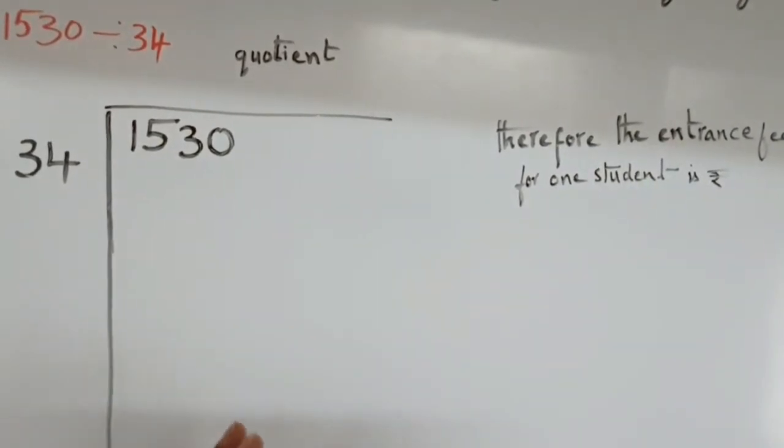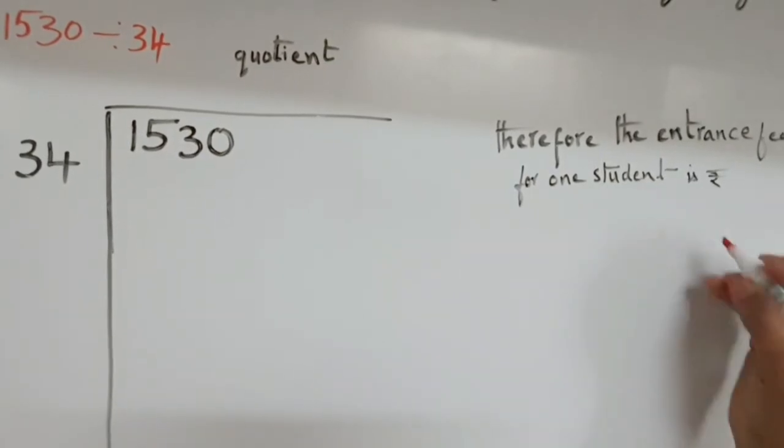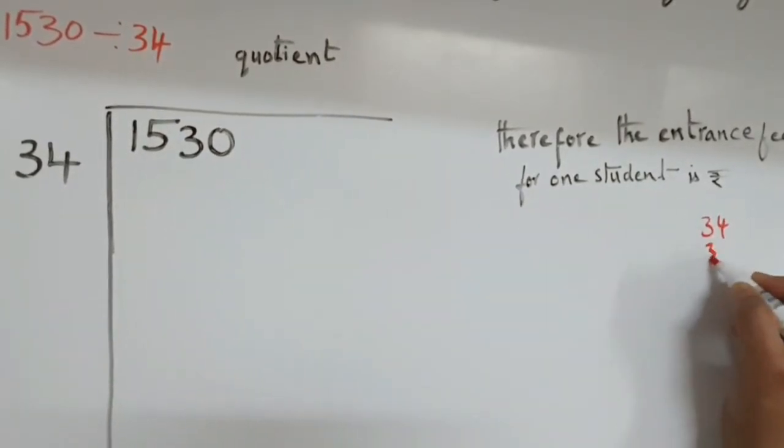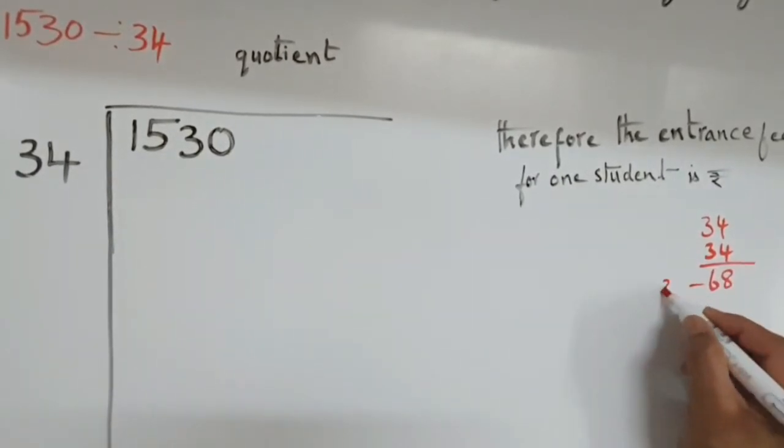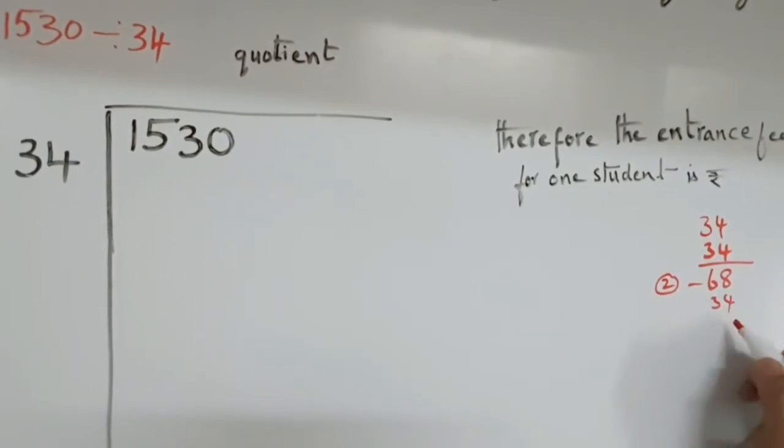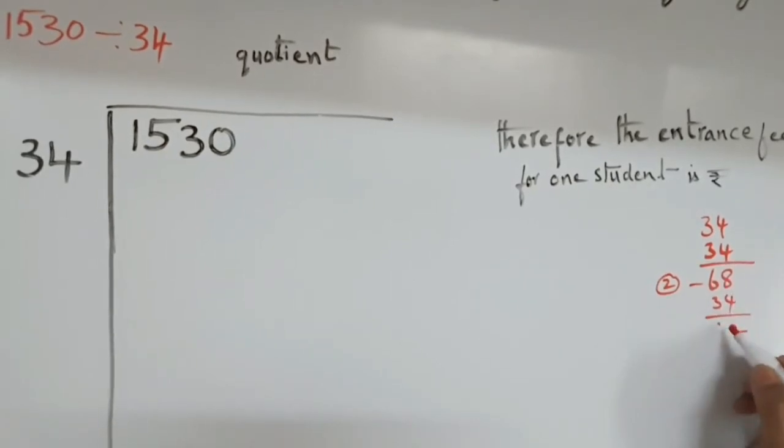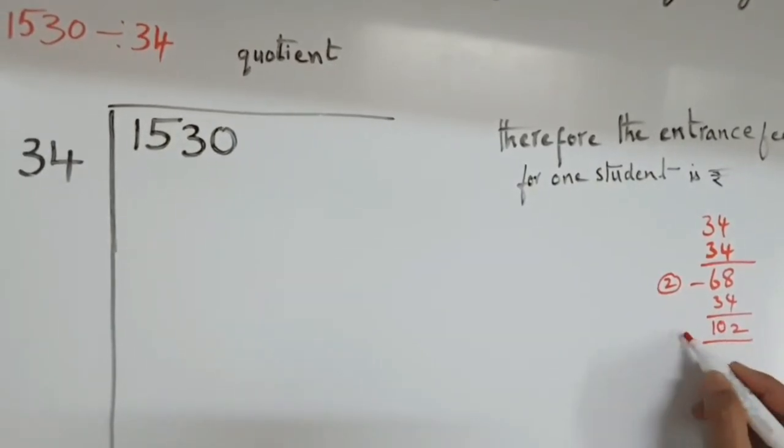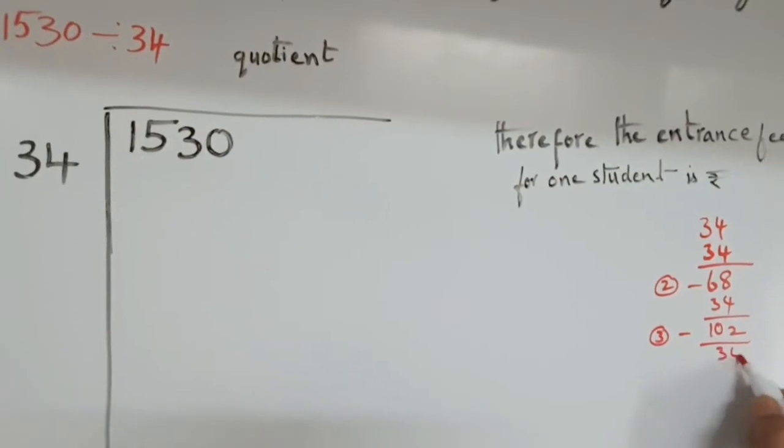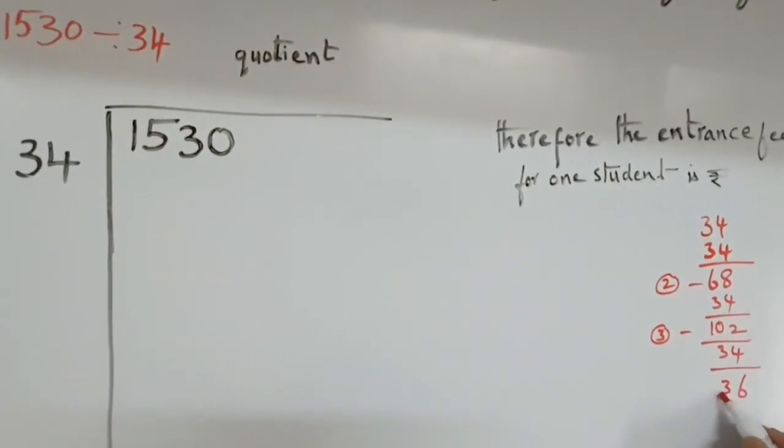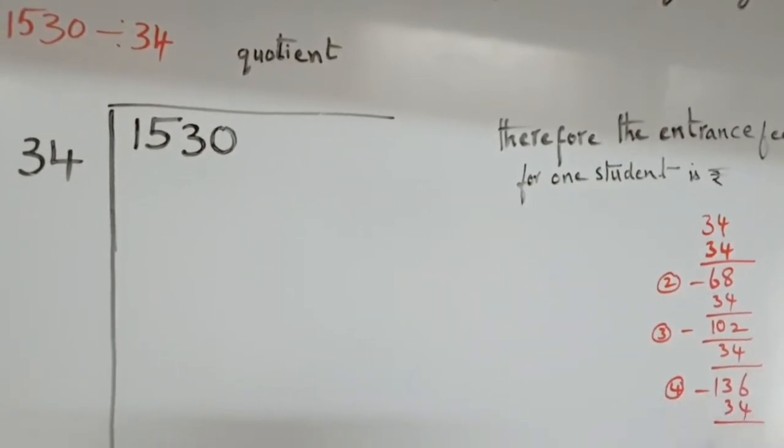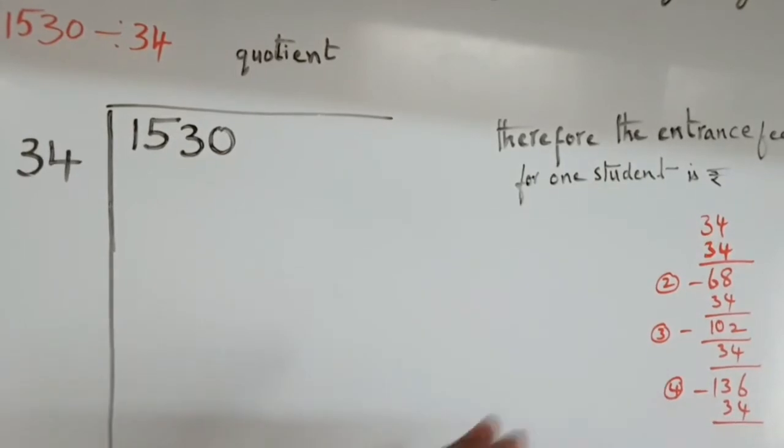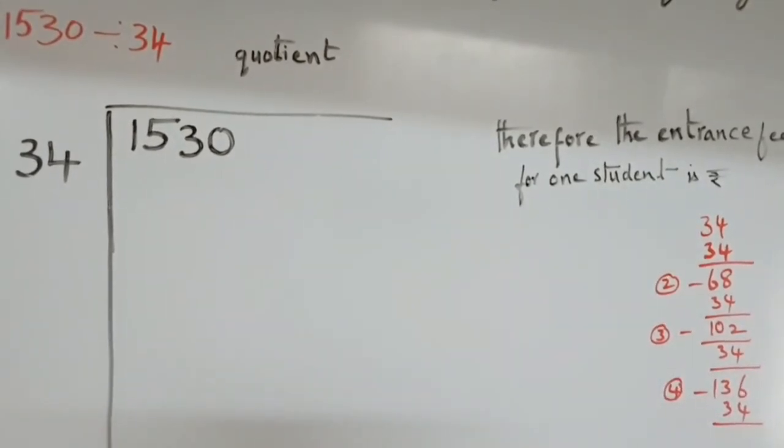Let us see addition. 34 plus 34, 68. It is our 2. 34, 12 plus 10. It is 3. Again 34. We can add. We will get the answer.